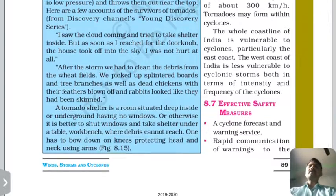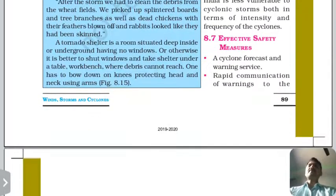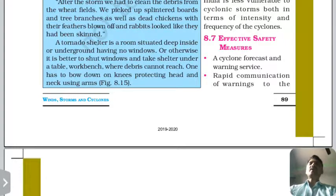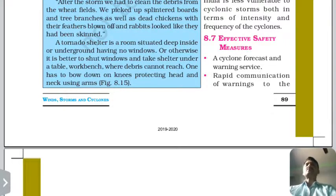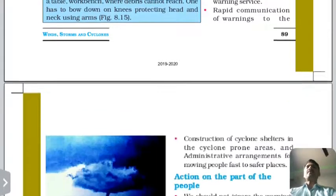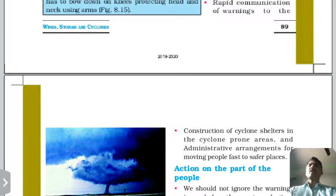Effective safety measures: cyclone forecasting and warnings should be issued in advance. Rapid communication is essential, and updates should be telecast repeatedly every half hour.